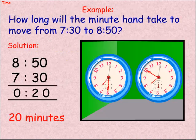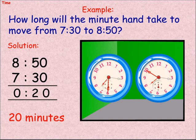Minutes. Example: How long will the minute hand take to move from 7:30 to 8:50? Solution: Subtract 7:30 from 8:50 equals 1 hour 20 minutes, which is 80 minutes.